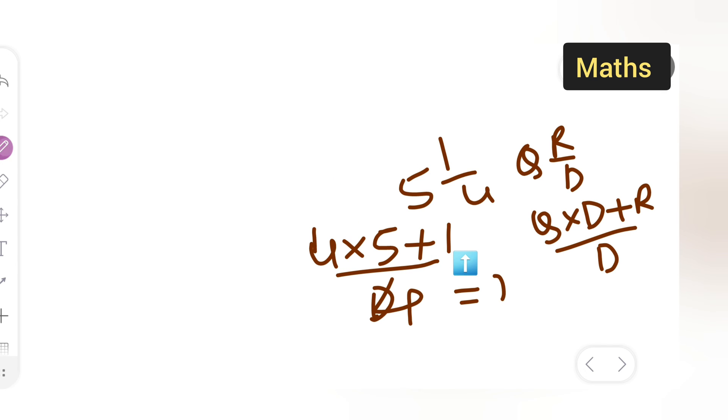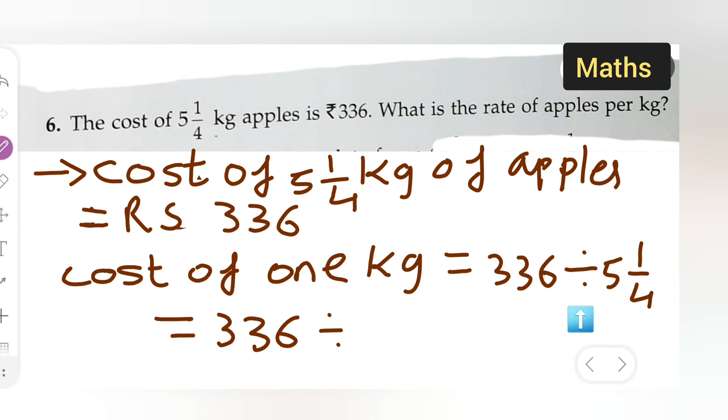So 4 fives are 20 plus 1, 21 upon 4. The answer is nothing but 21 upon 4, so you have to plug it here, 21 upon 4. What I have done is multiply this: 4 fives are 20 plus 1, 21 upon 4. You have to apply this rule.